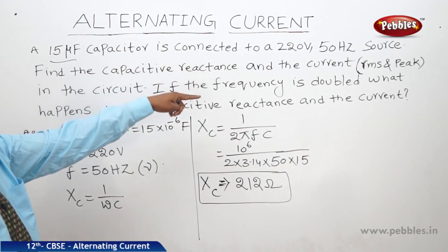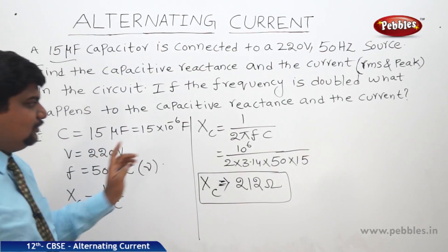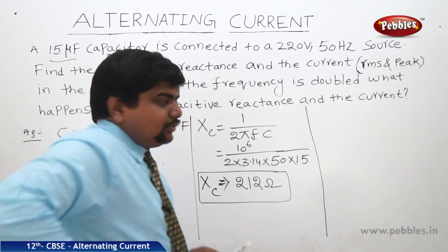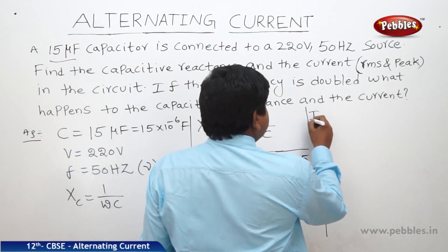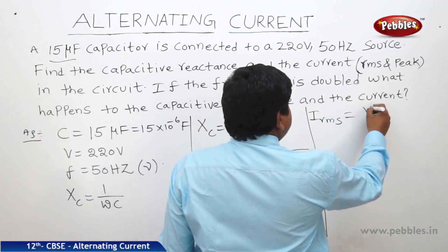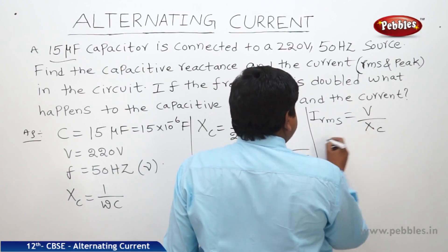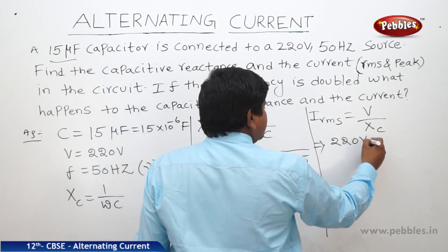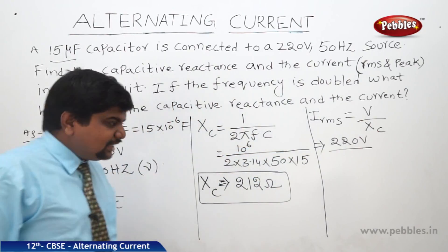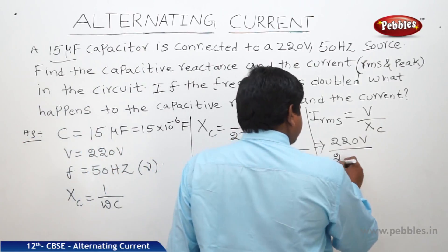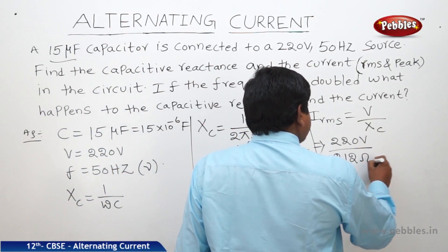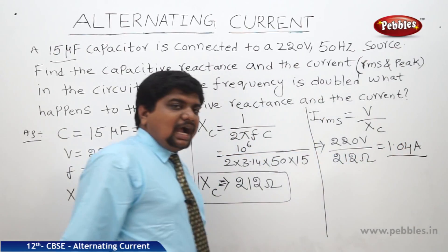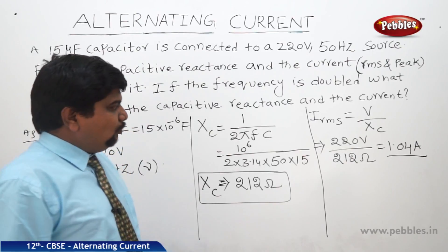Second, we should find out the RMS and peak current. The formula is V by XC. V RMS voltage is 220 volts. XC is capacitive reactance. This means 220 by 212. Answer is 1.04 ampere. This is the RMS current.